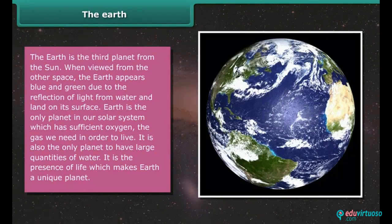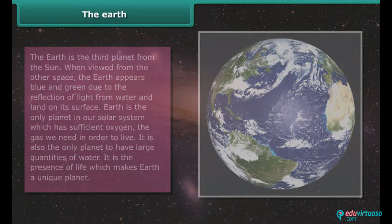The earth is the third planet from the sun. When viewed from outer space, the earth appears blue and green due to the reflection of light from water and land on its surface. Earth is the only planet in our solar system which has sufficient oxygen, the gas we need in order to live. It is also the only planet to have large quantities of water. It is the presence of life which makes earth a unique planet.